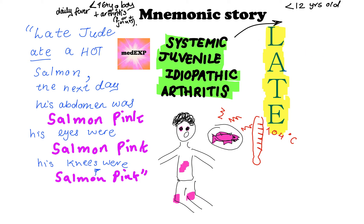Let's get into the mnemonic, because that will simplify a lot of things and tell you more about the systemic side effects of juvenile idiopathic arthritis. The mnemonic is: 'Late Jude ate a hot salmon. The next day, his abdomen was salmon pink.' Jude here should remind you that this occurs in juvenile idiopathic arthritis — he's our younger-than-16-year-old boy.